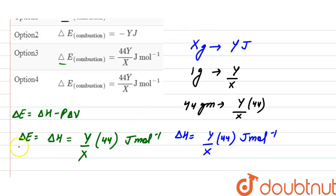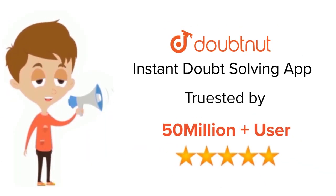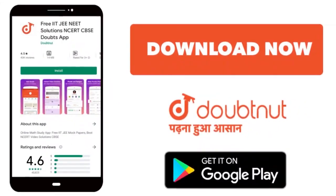Here is option third, that is 44 into Y divided by X joule per mole. And the options third and fourth both are correct because both are same and represent internal energy change. For class 6 to 12, IIT JEE and NEET level, trusted by more than 5 crore students, download Doubtnet app today.